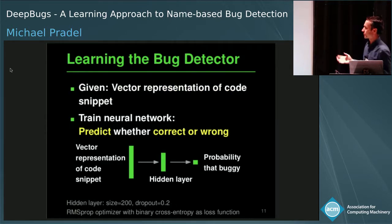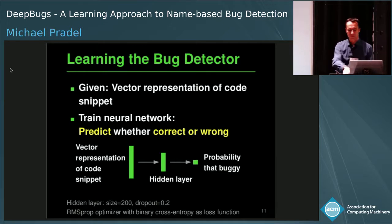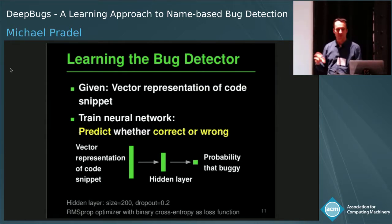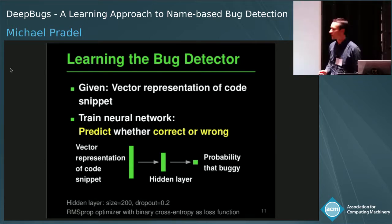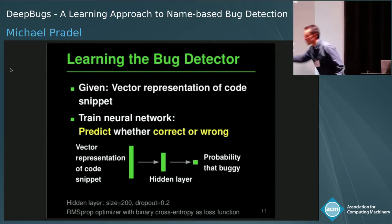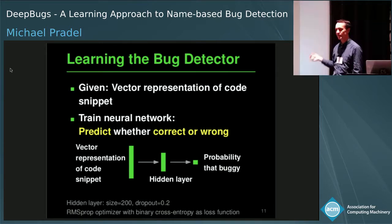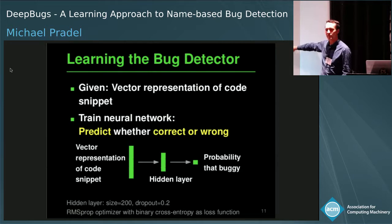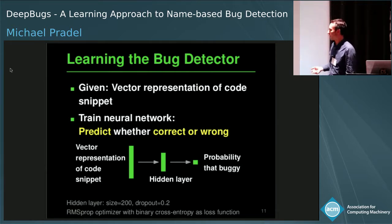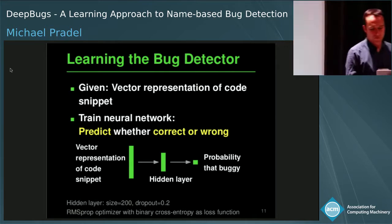Given this vector representation, the next step is to learn the actual classifier. We feed the vector into a standard feedforward neural network with a single hidden layer, which predicts a probability that the code is buggy. During training, we train the network to predict one for all buggy examples and zero for all correct examples, so it becomes very good at distinguishing correct code from buggy code.